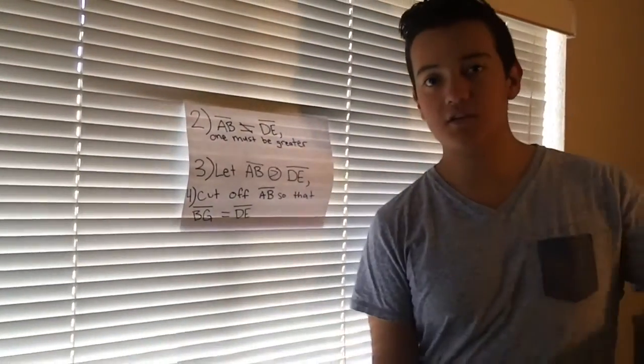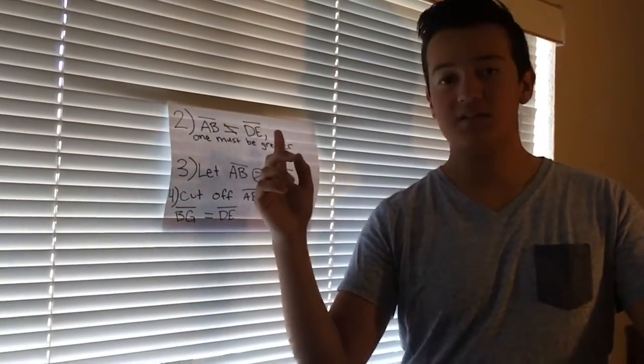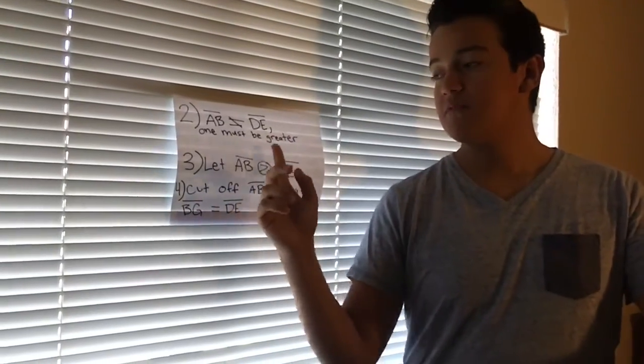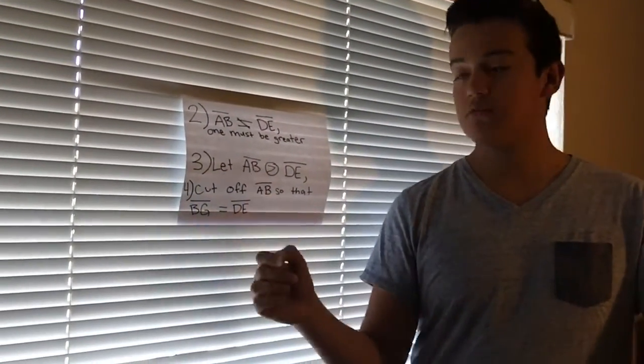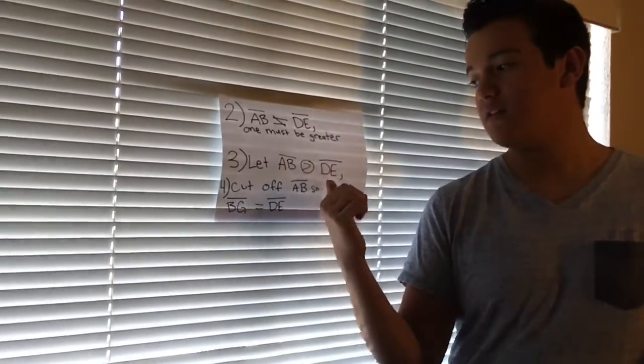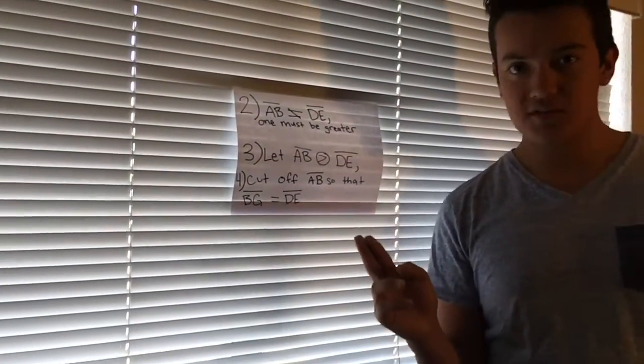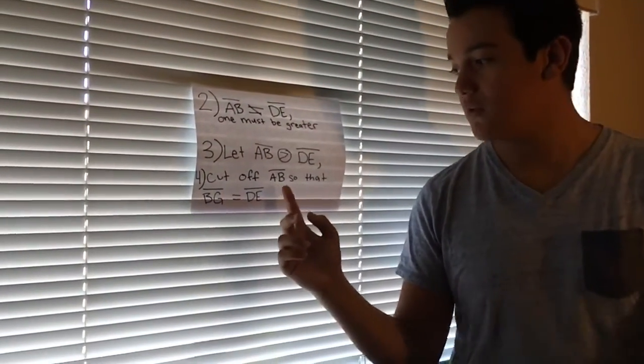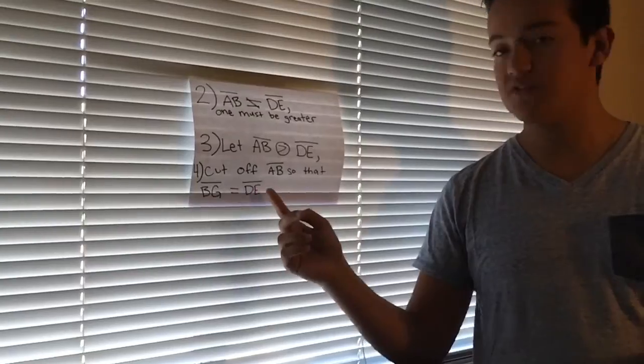So in this proposition, Euclid is trying to say that AB is not equal to DE. One must be greater. So in step three, we're going to let AB be greater than DE. In order for us to do that, we have to cut off AB so that BG equals DE.